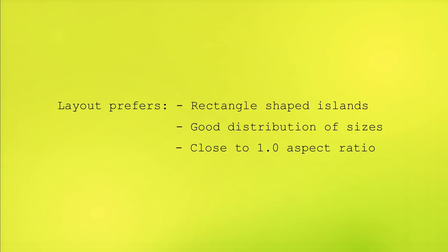Why is this important? The layout wants shapes to be rectangular — the more rectangular they are, the easier they are to pack. You also want a good distribution of sizes: if you have two really large islands, you place those and then can't fill the remaining holes well. You want islands of different sizes. An aspect ratio of roughly one is also helpful — islands with extreme length become awkward to pack.